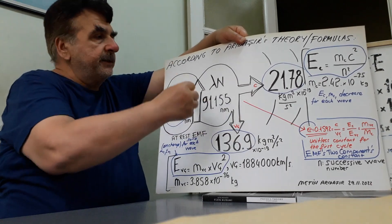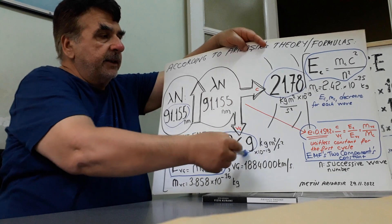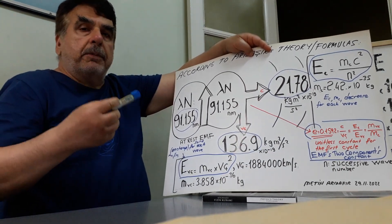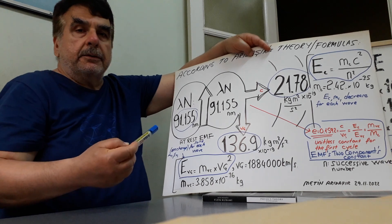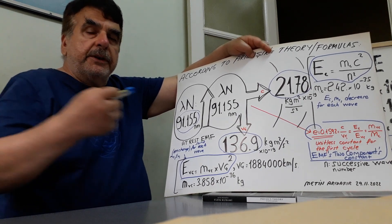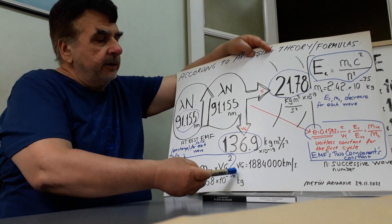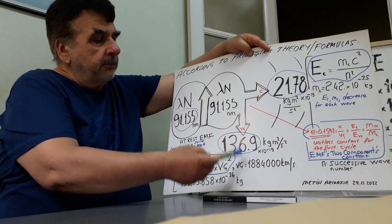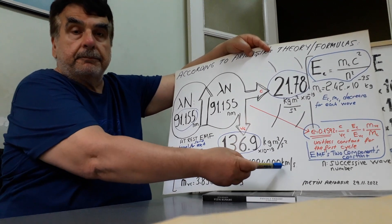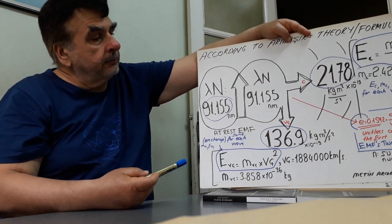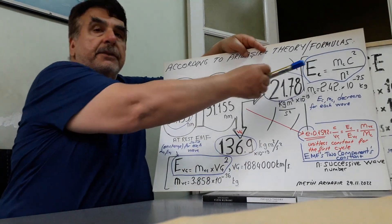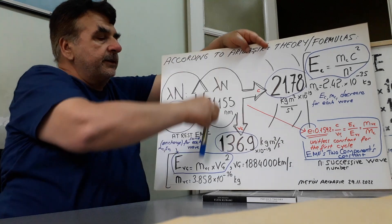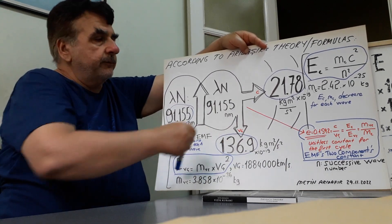On the second wave, linear velocity — we will multiply by wavenumber. As the wavenumber increases, at this rate: 1,884,000 kilometers per second multiplied by wavenumber. This is the C-direction, speed of light direction electron motion form. This is the linear velocity direction electron motion form.